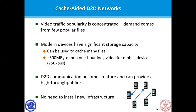To deal with these challenges, one of the most promising networks to improve video service is the cache-aided D2D network. It exploits the fact that video traffic concentrates on a few popular files and that storage is cheap, improving performance by caching popular files. Specifically, by caching popular files in devices and delivering them via device-to-device links when requested, the performance of video services can be significantly improved. Moreover, compared to other cache-aided networks, the cache-aided D2D network does not need to install any additional infrastructure.